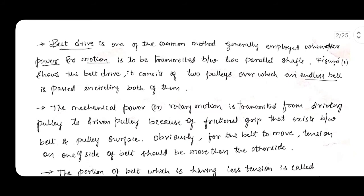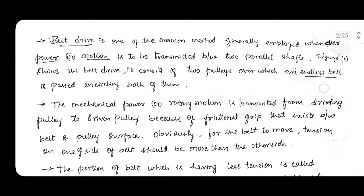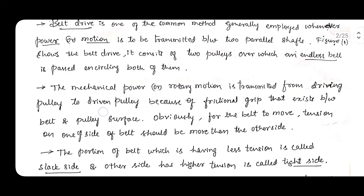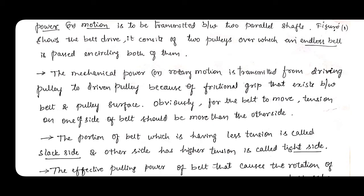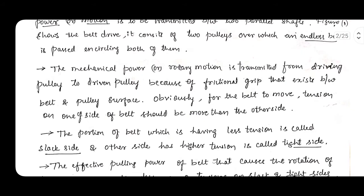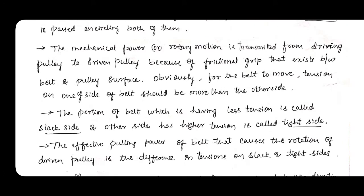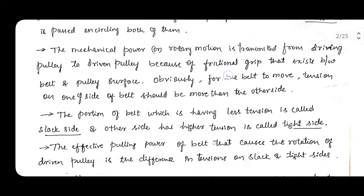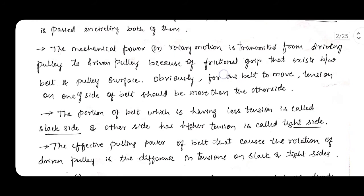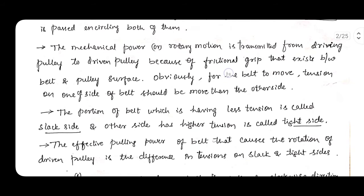Belt drive is one of the common methods generally employed whenever power is to be transmitted between two parallel shafts. It consists of two pulleys over which one endless belt is passed, encircling both of them. The mechanical rotatory motion is transmitted from the driving pulley to the driven pulley because of the frictional grip existing between the belt and the pulley surface. Better friction results in better transmission of power.